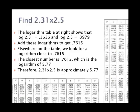To multiply 2.31 times 2.5, again we look up the logs of 2.31 and that's .3636 and the log of 2.5 and that's .3979. We add those logs together to get .7615 and we look for something close to that which we find a .7612, that's the log of 5.77, so we say that 2.31 times 2.5 is approximately 5.77.